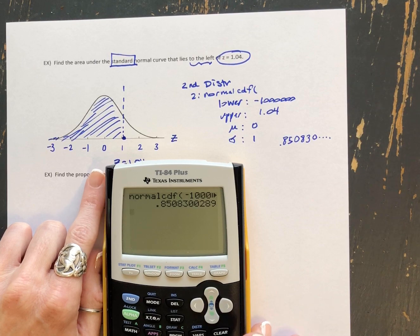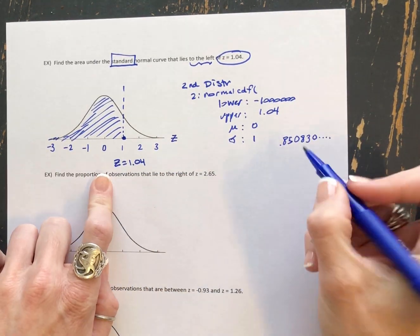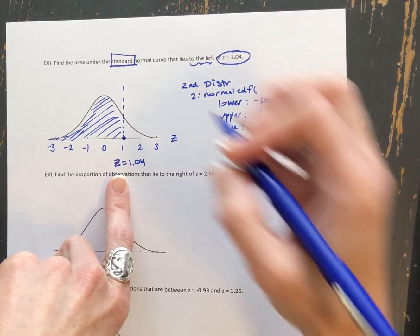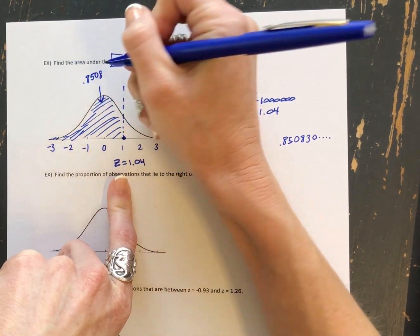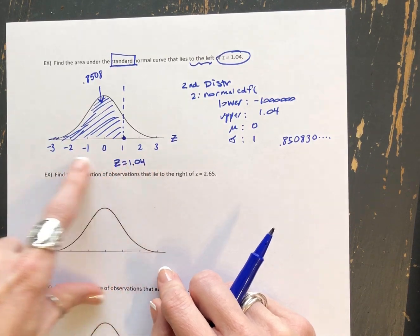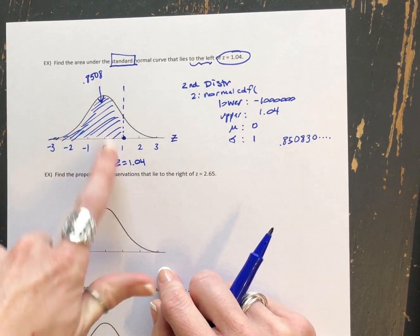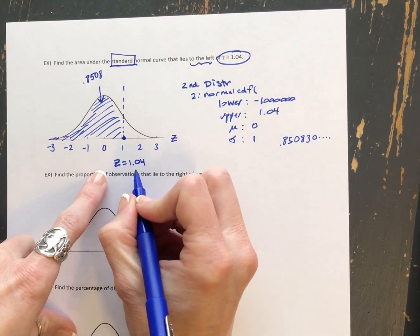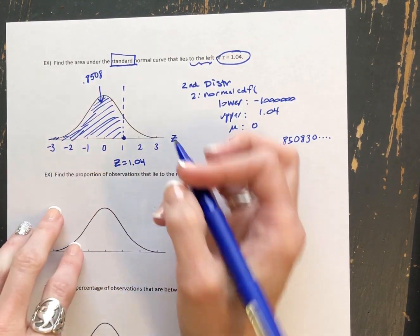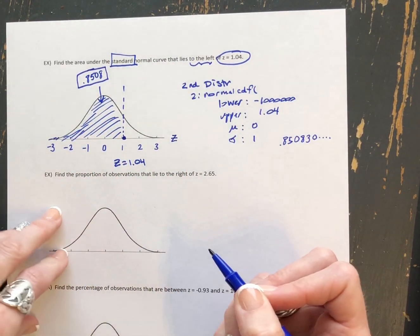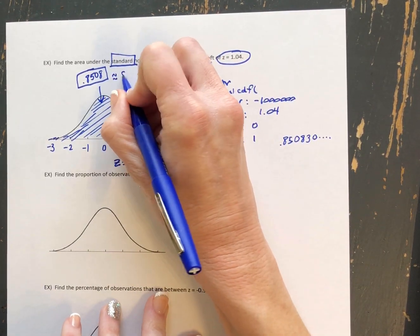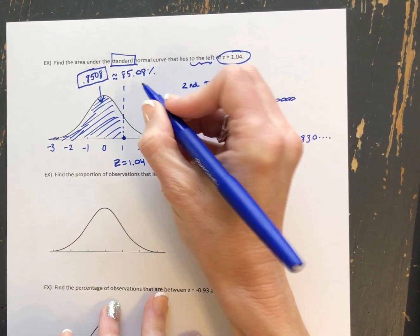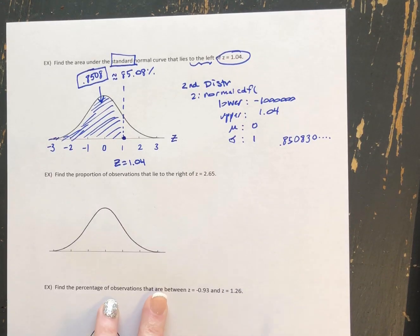We normally, as a standard, are going to round our areas to four decimal places. So 0.8508. And the other thing I want to mention is I will, as a standard, write areas up in the top of the curve and z-scores down along the bottom. That's so that we don't get confused ever which one was which. So our z-score was 1.04. The area to the left of that z-score was 0.8508. And we can write that as a percentage if we wanted to. That's about 85.08% of the area under that curve. So that was an example finding area to the left of a z-score.